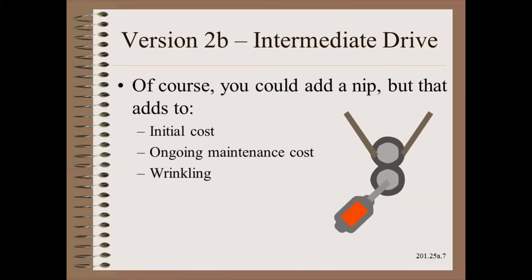Of course, you could add a nip for traction. However, the nip would increase initial costs. The nip would also increase ongoing maintenance costs, especially if one of the rollers is rubber covered. Finally, and perhaps most importantly, you will make your machine more wrinkle prone, as we learned in Web 101. The nip will make a machine quite intolerant to less than perfect rollers on less than perfect webs.